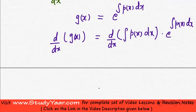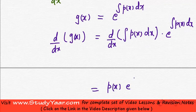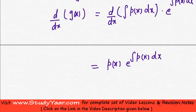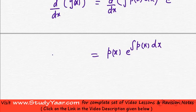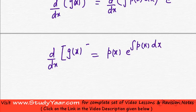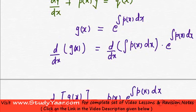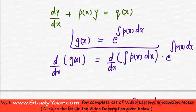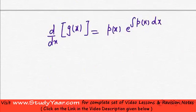So what I get from this is d by dx of an integral p(x) dx is going to be p(x). So I have p(x) e raised to power p(x) dx. So what do you get? d by dx of g(x), this is your d by dx of g(x).